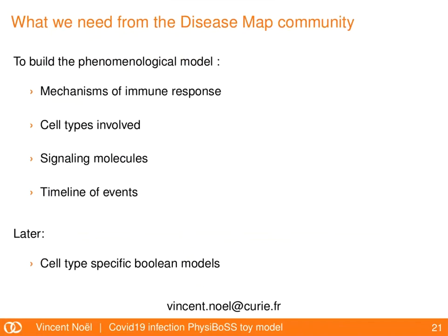To finish, what we need from the disease map community now is first a way to build the phenomenological model: we need to know more about the mechanisms of immune response, which cell types and which signaling molecules are involved in communication between cells, and a global timeline of events so we can fit rates into our models. Ultimately we will also need cell-type-specific Boolean models, which I know is not easy but is necessary. That's it for me.